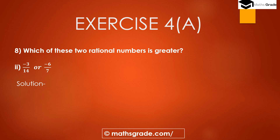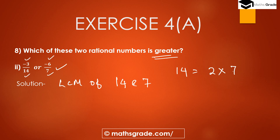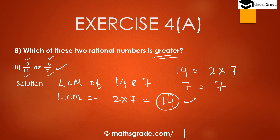Question number 8, part (b): which is greater — minus 3 divided by 14, or minus 6 divided by 7? In minus 3/14, minus 3 is the numerator and 14 is the denominator. In minus 6/7, minus 6 is the numerator and 7 is the denominator. We convert these to equivalent rational numbers by finding the LCM of the denominators 14 and 7. The prime factorization of 14 is 2×7, and 7 is just 7, so the LCM is 14.